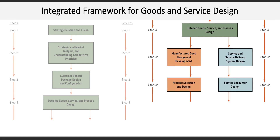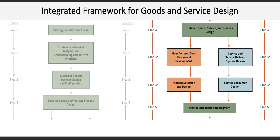The process to produce a good is determined, or the service encounter is developed for a service. Step 5 involves the introduction or deployment of the product or service to market. Here, the final product or service, or bundle of goods and services, is advertised and marketed to customers.